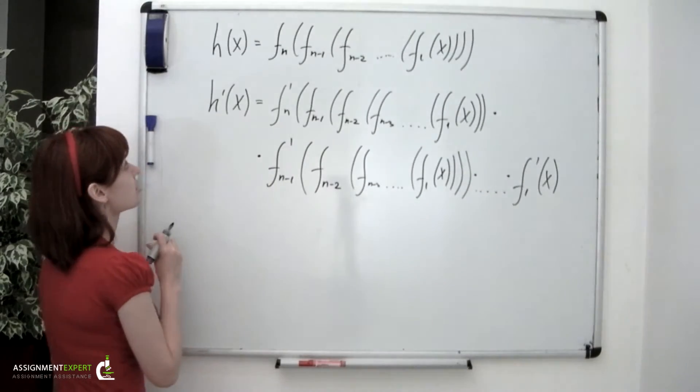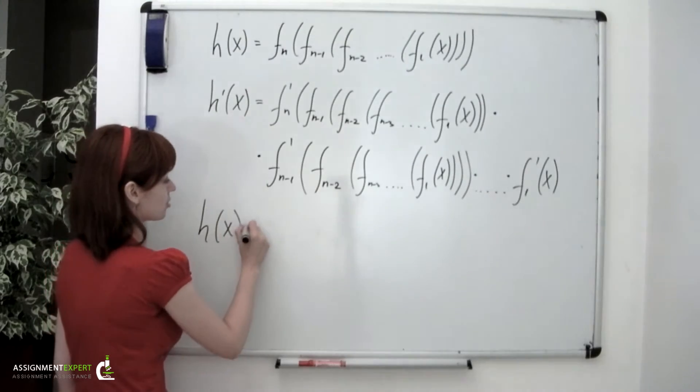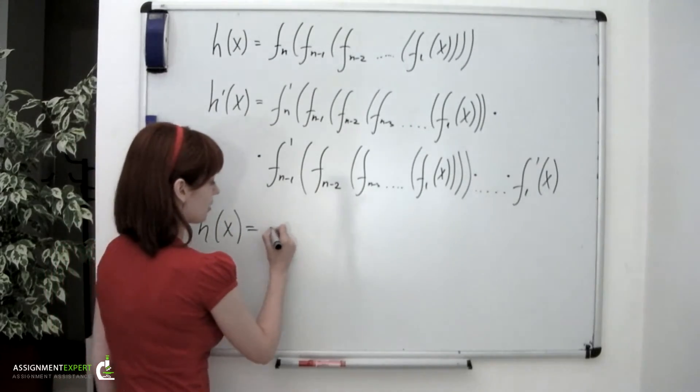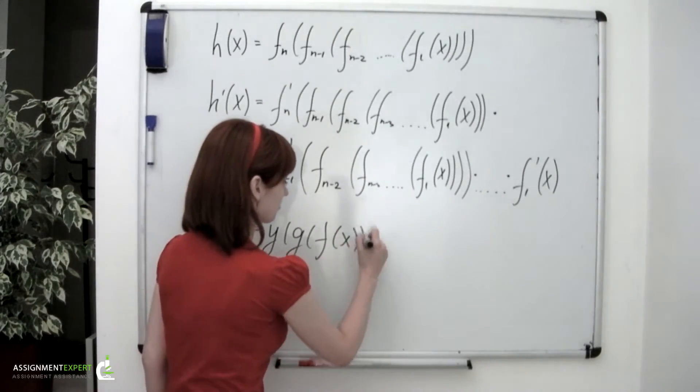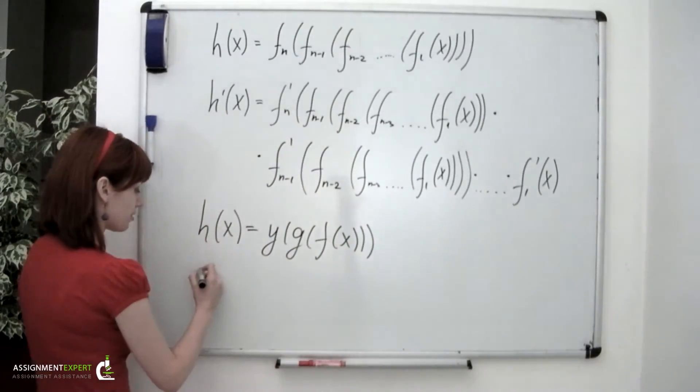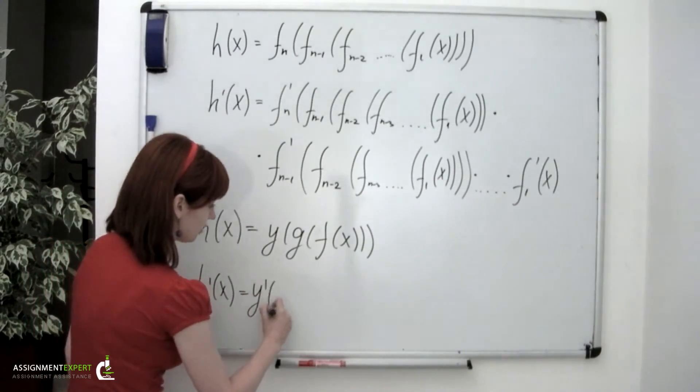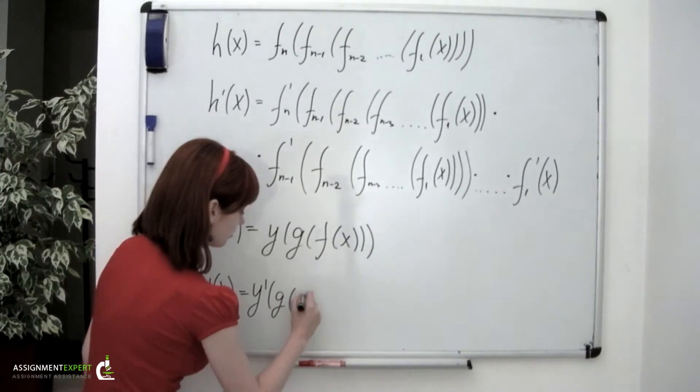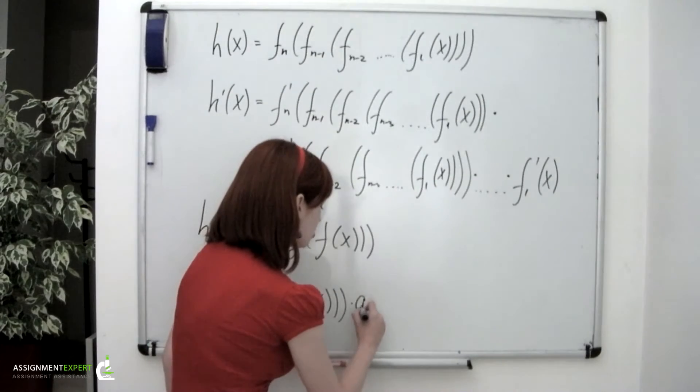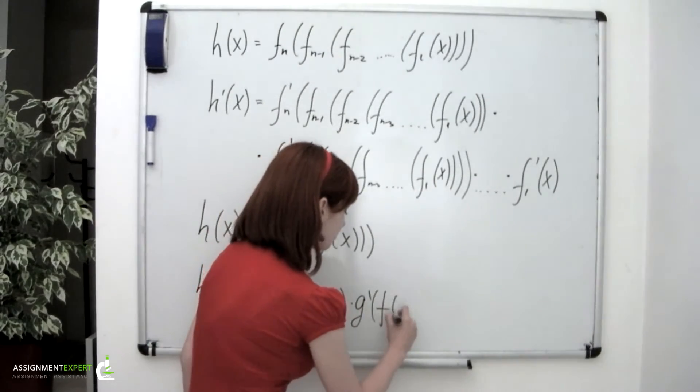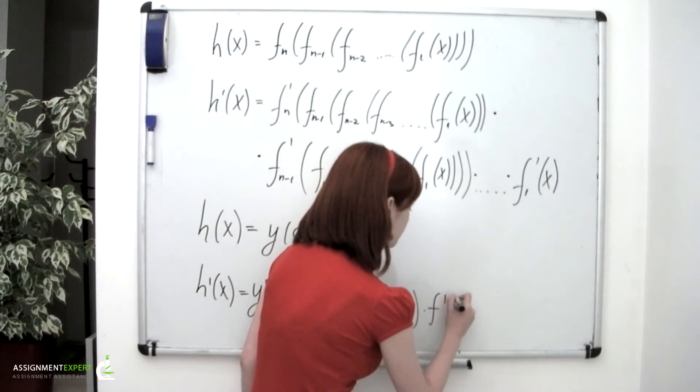Or if we consider the case of composition of three functions, so if our h function equals y of g of f of x, its derivative is equal to y prime multiplied by g prime multiplied by f prime.